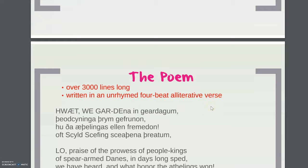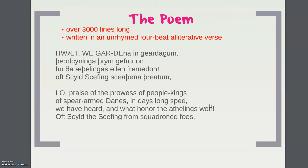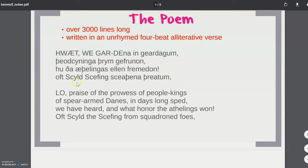The poem is over 3,000 lines long, which is huge. It's written in unrhymed, four-beat, alliterative verse. Here is the Old English text of the first few lines of Beowulf — you'll notice there are a lot of letters we don't recognize in English today, letters that have changed over time. Unrhymed is pretty self-explanatory: there are no end rhymes and no internal rhymes either.